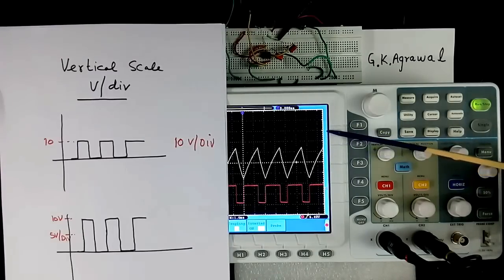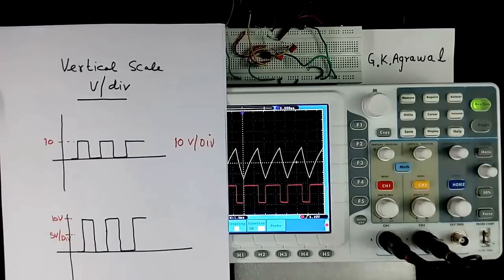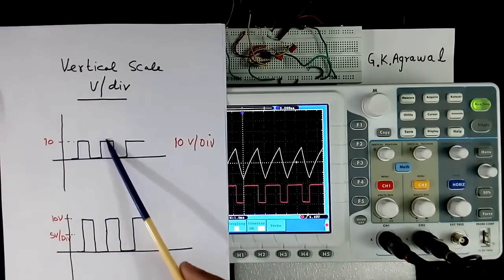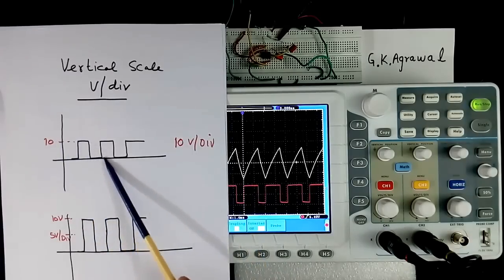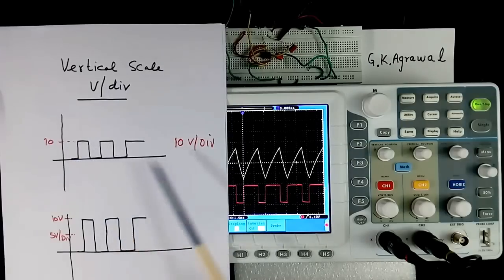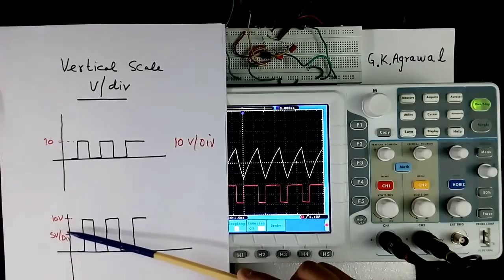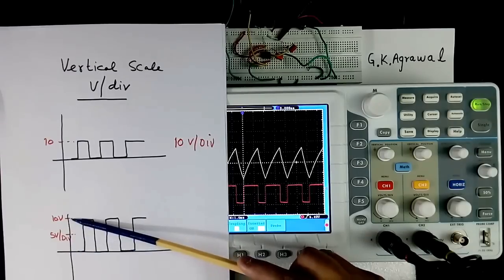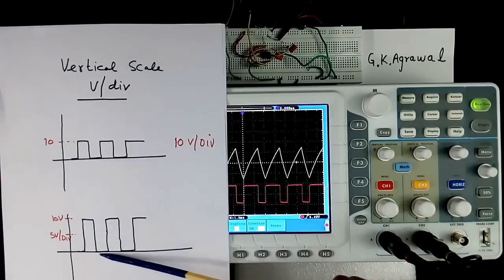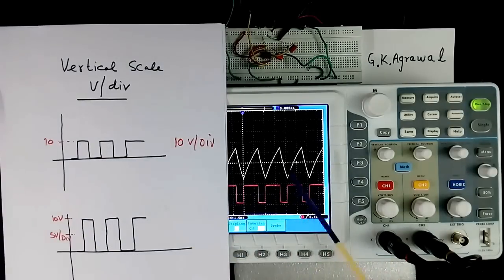Now suppose I have one signal here. And this is 10 volt. And I have set 10 volt per division. So within one division signal will come. Now if we change from 10 volt to 5 volt, so one division from here to here is 5 volt. To make 10 volt, it will require 2 divisions. So this signal will become like this.